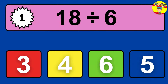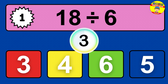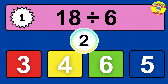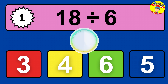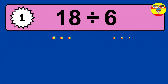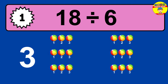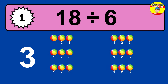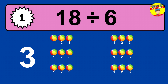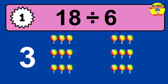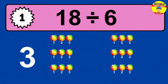18 divided by 6 — time to think. Let's go to the solution. Divide the number 18 by 6. Each group contains 6 units, so dividing 18 by 6 results in 3 equal groups. Thus, the result is 18 divided by 6 equals 3.